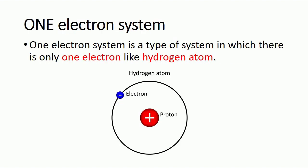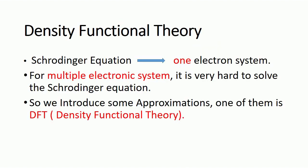A one electron system is a type of system in which there is only one electron — like an atom with only one electron. But if I have a system of multiple electrons, like a molecule with a lot of electrons or an atom with more than one electron, it is very hard to solve the Schrödinger equation.